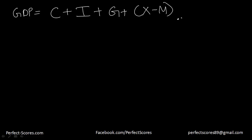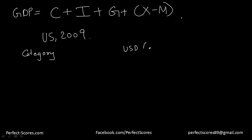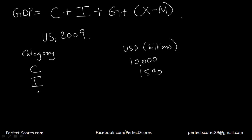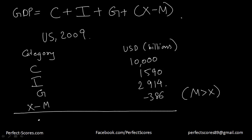Let's use the expenditure approach to find the GDP of the United States in the year 2009. Consumption: $10,000 billion; private investment: $1,590 billion; government expenditure: $2,914 billion; exports minus imports: negative $386 billion — negative because imports are greater than exports. The total gross domestic product using the expenditure approach came out to be $14,118 billion.